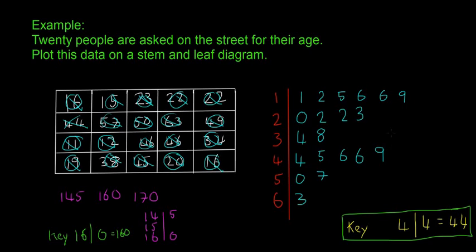That's almost all on stem and leaf diagrams. Things we can see really easily are the most common age—you can see repeated numbers quite easily—and the most common range of age, like the forties or in this case the teens. Those are some of the uses.